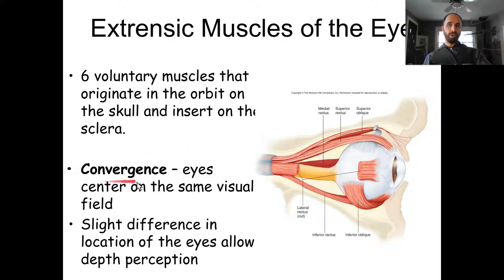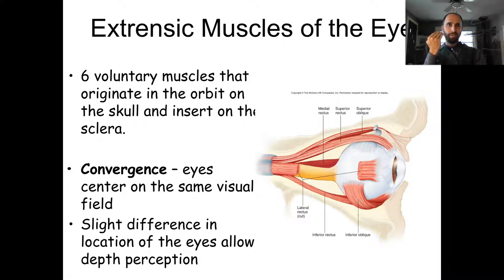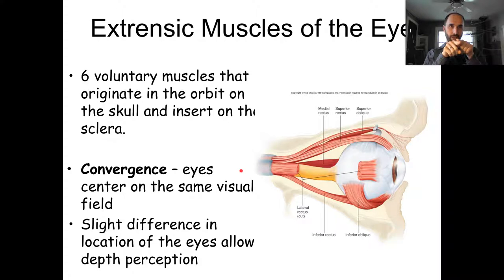Convergence is when both eyes look at the same thing. As humans we can't really diverge our eyes independently the way lizards can. Some people can sort of do that, and there are conditions like lazy eye where one eye looks differently. Generally we can only converge, except when crossing our eyes — then both go medial and you lose convergence. Convergence allows us to have depth perception.